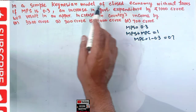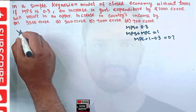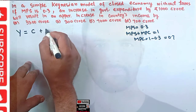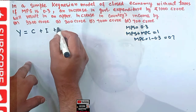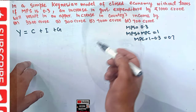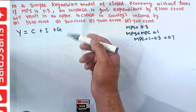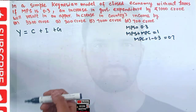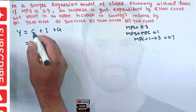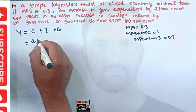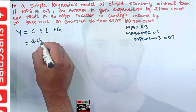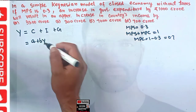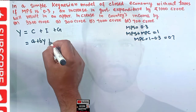Our model here is a Keynesian model of closed economy. So income Y equals consumption expenditure plus investment expenditure plus government expenditure. Since it is a closed economy, there are no net exports, so X minus M is not included. The consumption function is given by C = a + bY, since no taxes are involved, so Y here is disposable income.